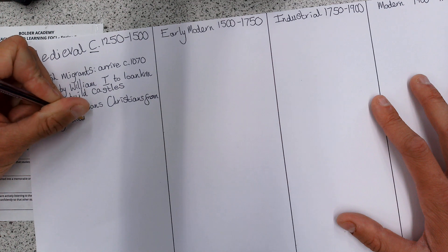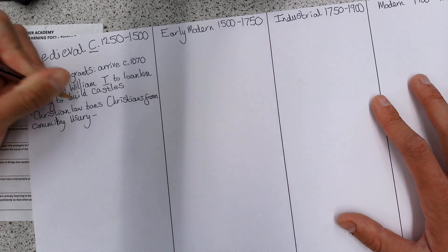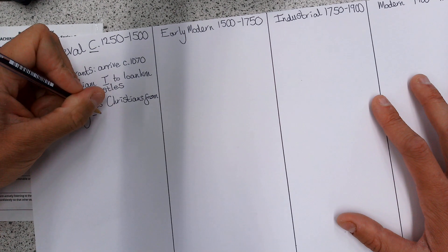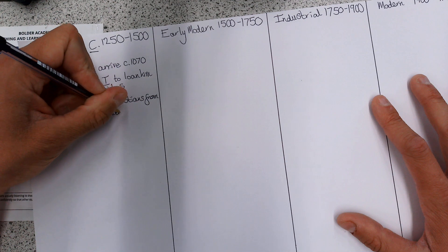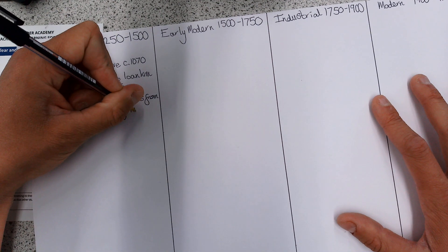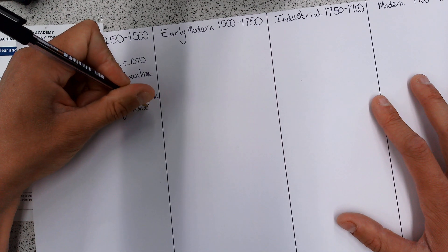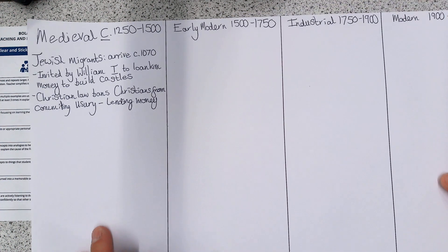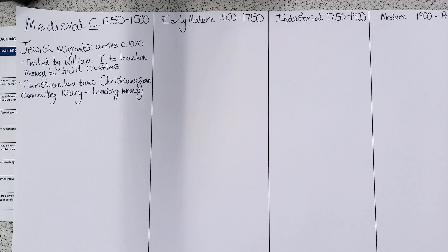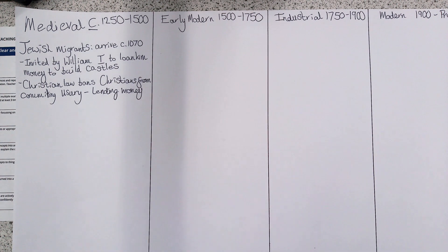Usury in simple terms means lending money — it actually means charging interest on lending money. That's the way banks make money from lending: they charge interest. Christian law bans Christians from doing that in the early medieval period, so that's why William invites them over.